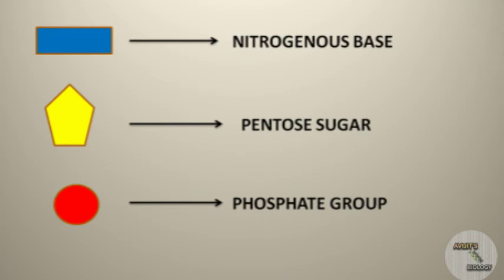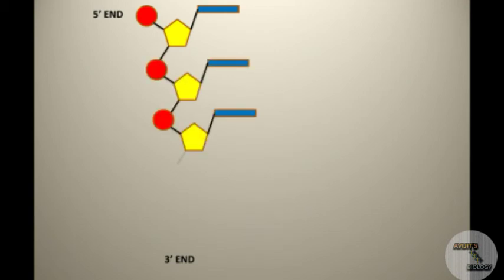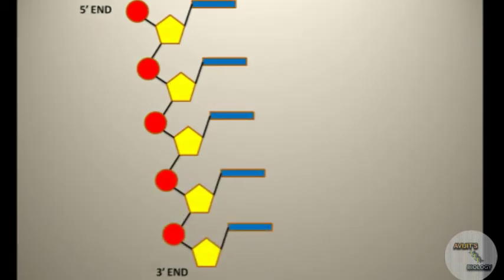If we consider this rectangle as a nitrogenous base, this pentagon as pentose sugar, and this circle as phosphate group, then we can see how the chain of DNA is formed. Look at the animation carefully — this is the strand which starts from the 5' end and ends at the 3' end.